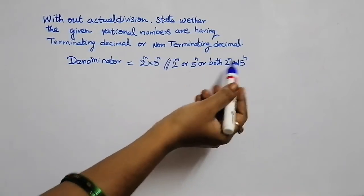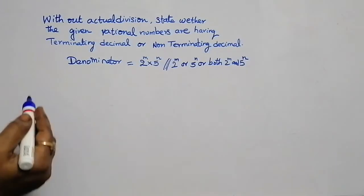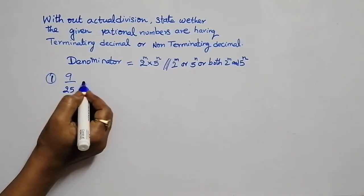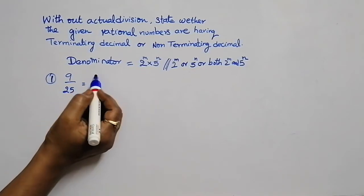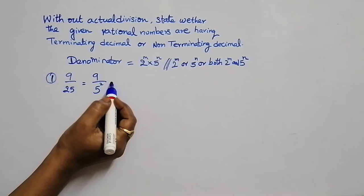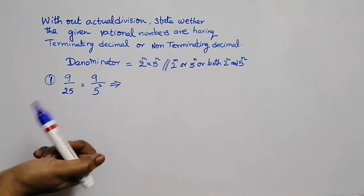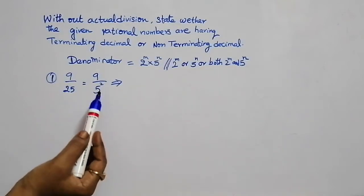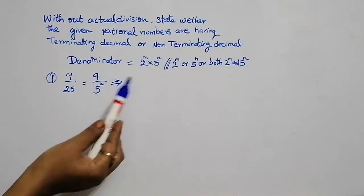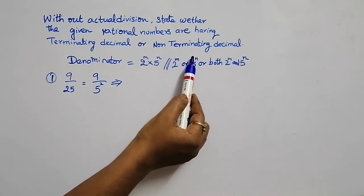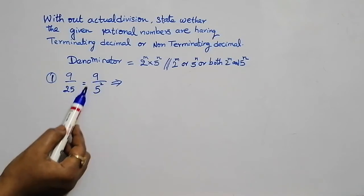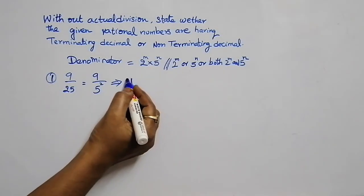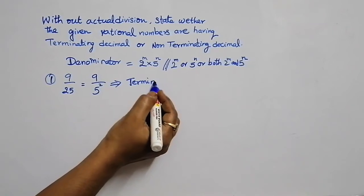Let us see an example: 9 by 25. We observe the denominator: 25 = 5 square, which is 5 power n form. The denominator is in the form of 5 power m only. This condition is satisfied, so the decimal representation for this rational number is a terminating decimal.